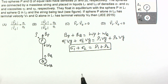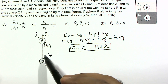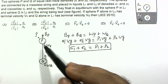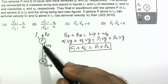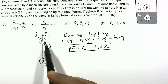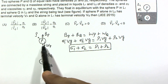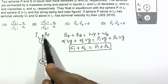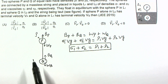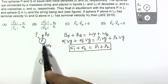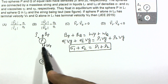This is our key relation. Since the string must be taut, we need an additional condition. We will now draw individual free body diagrams for each sphere separately to understand this condition.